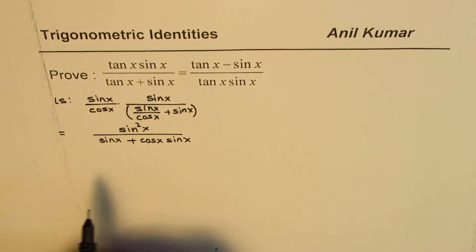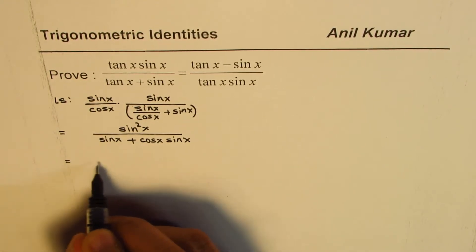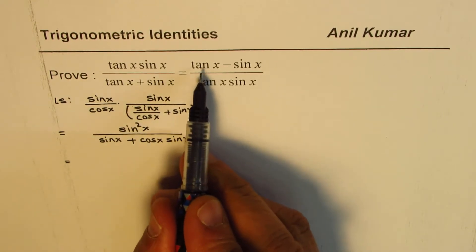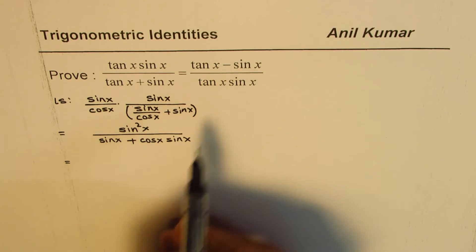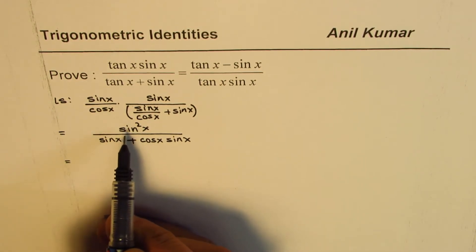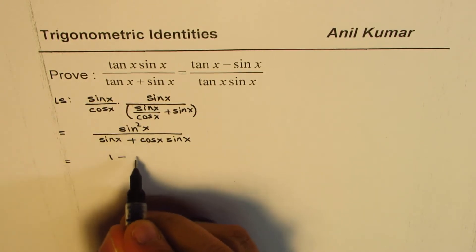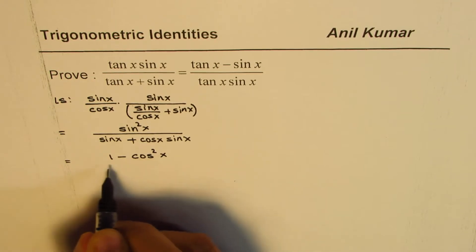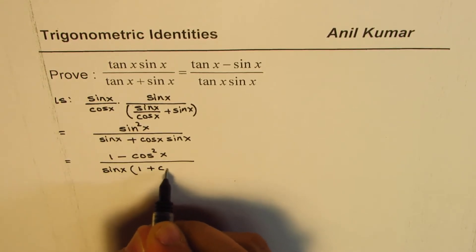It becomes much simpler if you write like this. Now we can always take sine x common in the denominator. Since we are looking for something minus something in the top, I will replace sine square x as 1 minus cos square x. This is a very strategic step.